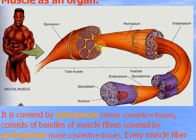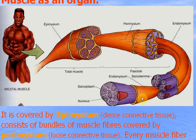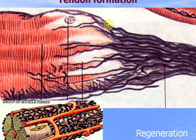And every individual skeletal muscle fiber is covered by a thin connective tissue layer called endomysium, covering all individual muscle fibers. There, collagen fibrils are present.